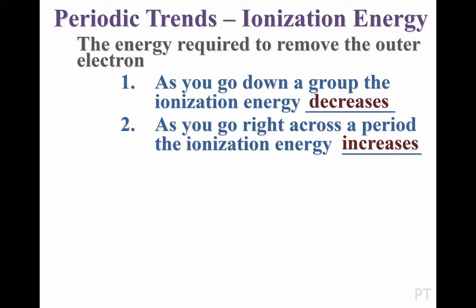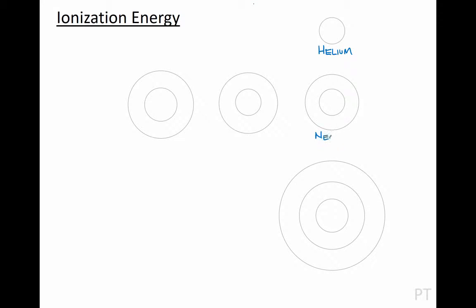Now let's look at the explanation. Knowing the trend is only half of your understanding — I want you to understand why the trend occurs. For this, we'll model a few of the elements found in group 18 on the periodic table: helium, neon, and argon. Recall that helium has 2 protons, neon has 10 protons, and argon has 18. Helium also has 2 electrons in its first shell, while neon has 2 in the first shell and 8 in the second.